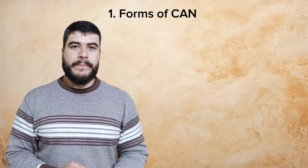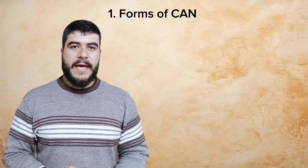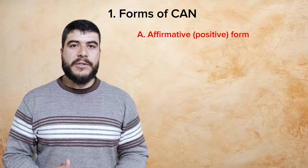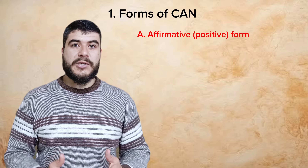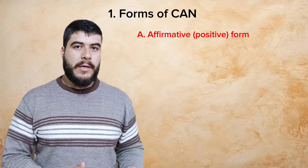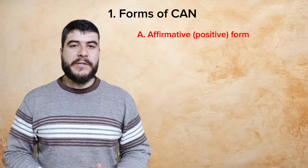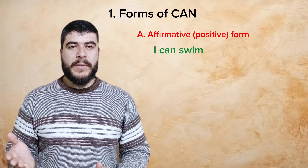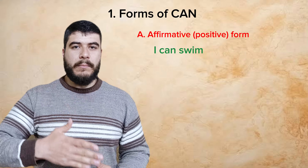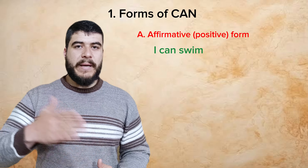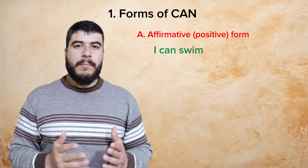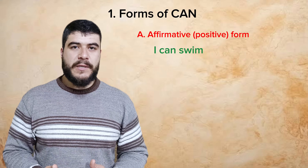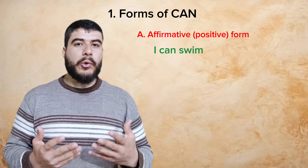Let's begin with the first point: the forms of can. The main form of can is the affirmative one. In the affirmative form, it's not used with "not" and it's not used in a question — it's the positive form. For example, "I can swim." So the subject is "I," the modal verb is "can," and "swim" is the main verb. The modal verb "can" is used before another verb in a sentence to show an idea.